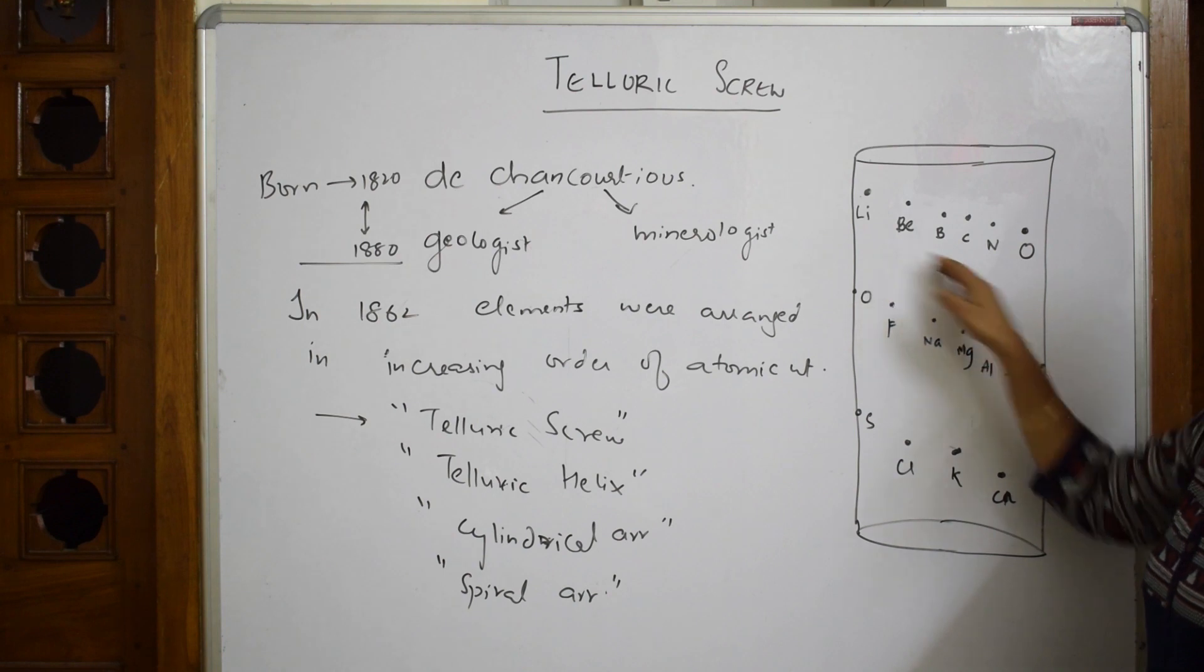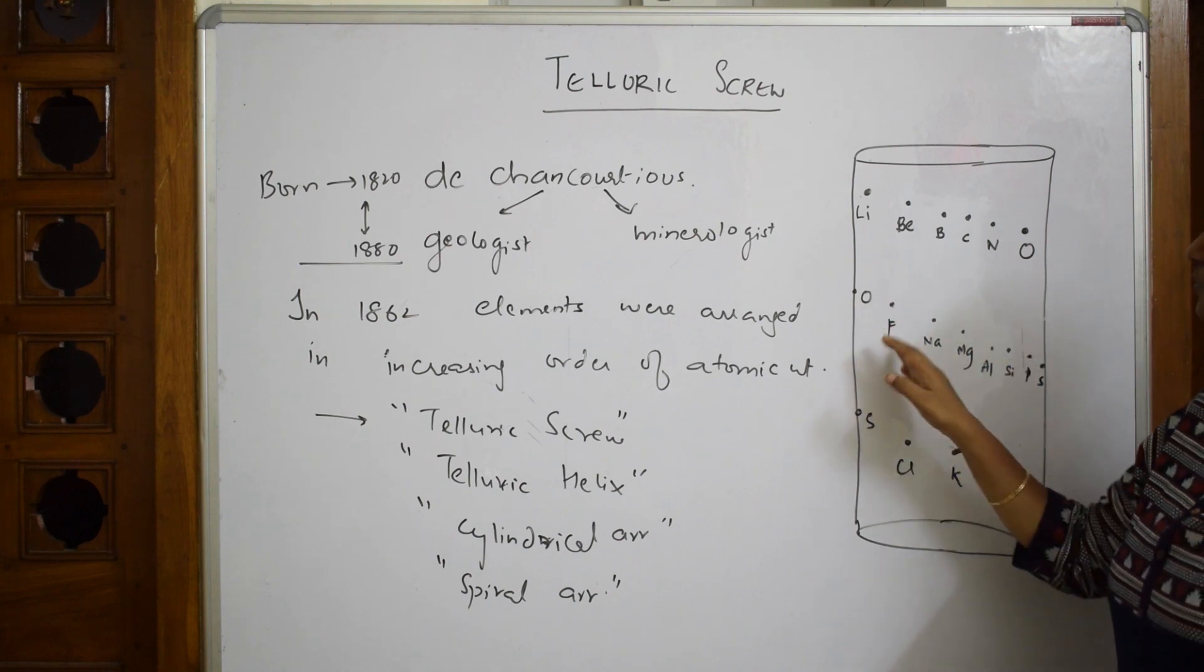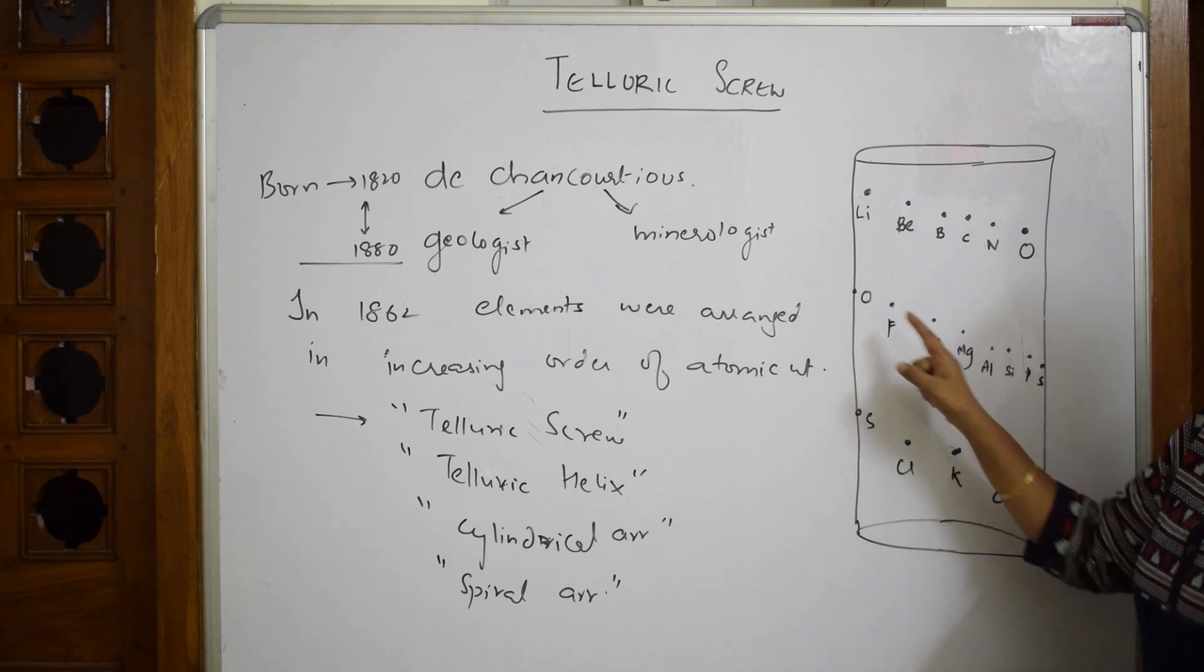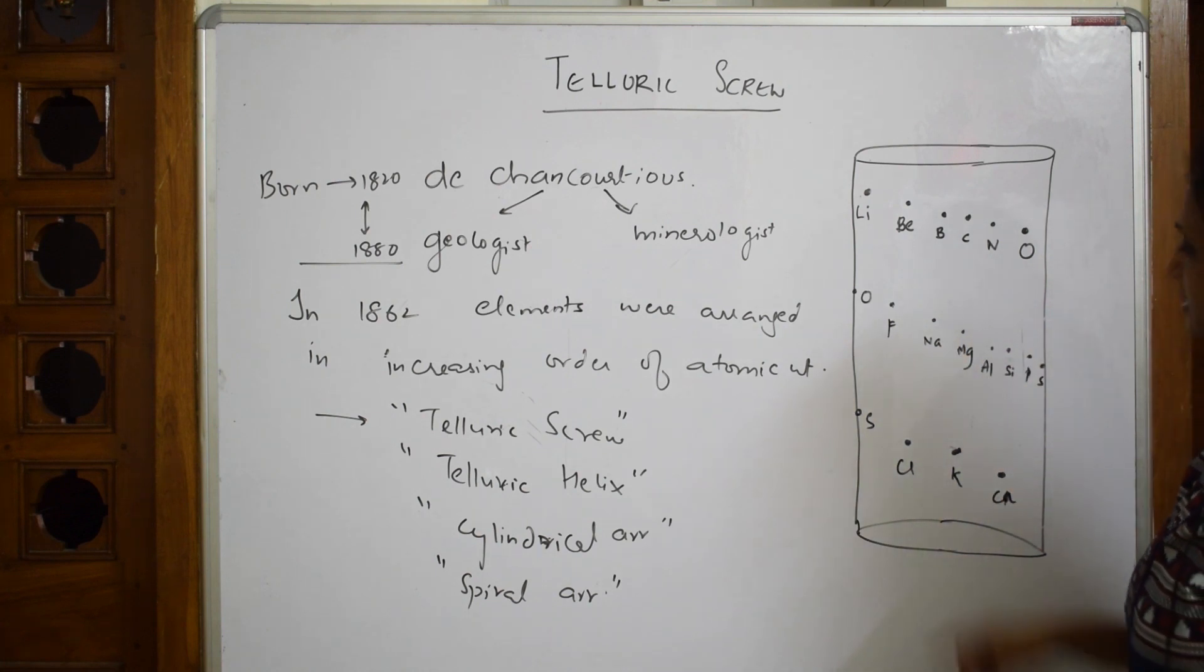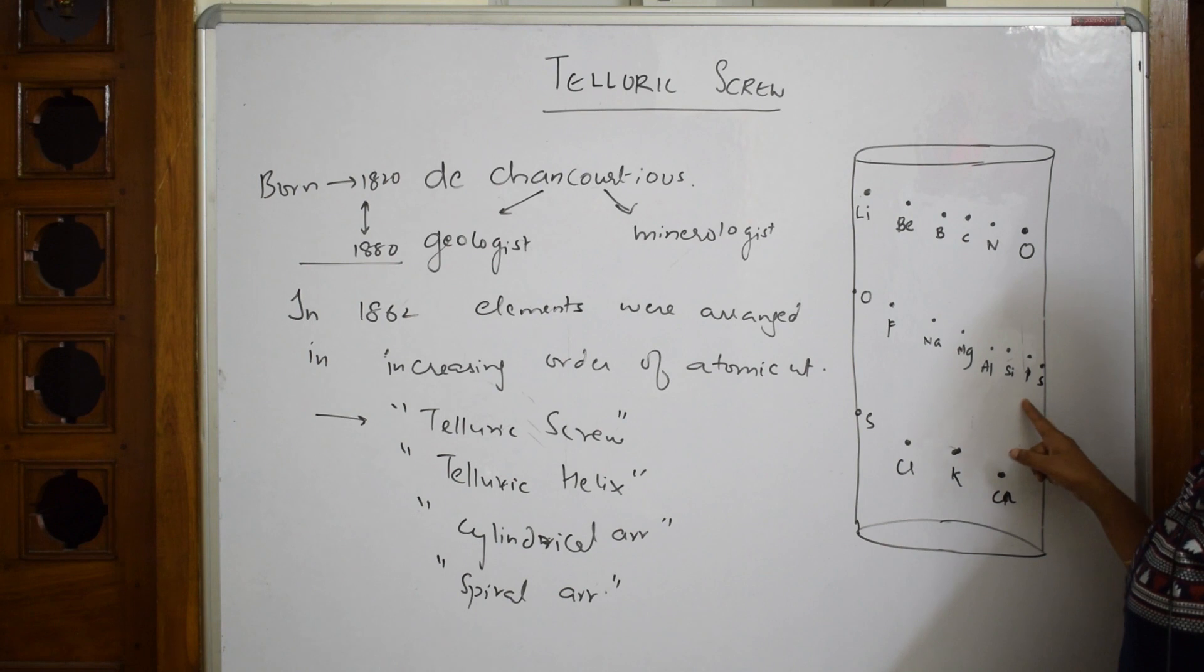Here lithium, beryllium, boron, carbon, nitrogen, all are increasing atomic mass. This was oxygen, fluorine, but here oxygen, fluorine, 8, 9, 10 not there because it is an inert gas element and then sodium, magnesium, aluminium, silicon, phosphorus, sulphur, chlorine, potassium, calcium.